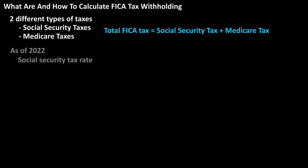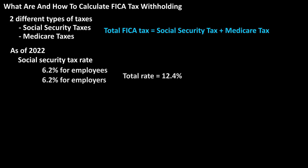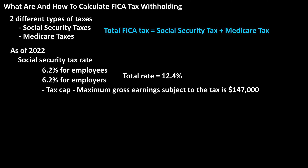As of 2022, the current Social Security tax rate is 6.2% for employees and 6.2% for employers, totaling a rate of 12.4%. This rate does have a tax cap or limit. The maximum amount of income subject to the Social Security tax is $147,000 in 2022.